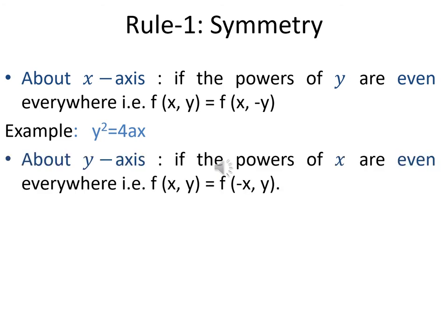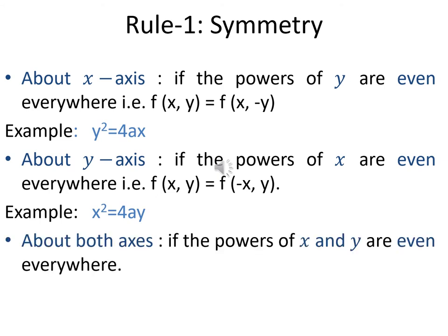Second, symmetry about the y-axis: if all powers of x are even — meaning if we replace x with −x the equation is unchanged — then the curve is symmetric about the y-axis. For example, x² = 4ay: x has power 2 which is even, so the curve is symmetric about the y-axis. Third, if all powers of both x and y are even, the curve is symmetric about both axes. For example, the circle x² + y² = a²: both x and y have even powers, so the circle is symmetric about both the x and y axes.